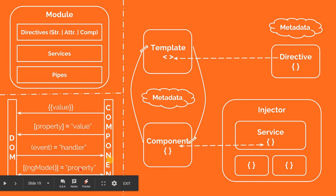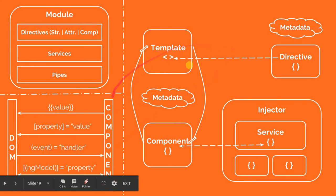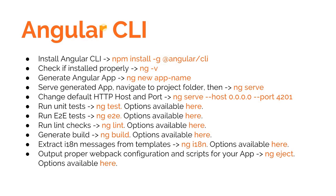Finally, we have two-way data binding using ng-model. If a property is defined on the component and it changes, it will also get updated on the view, and vice versa — if the property is updated on the view, it will also update inside the TypeScript class. This is the overall architecture of a basic Angular application. Next up, we'll talk about Angular CLI — see you in the next video.